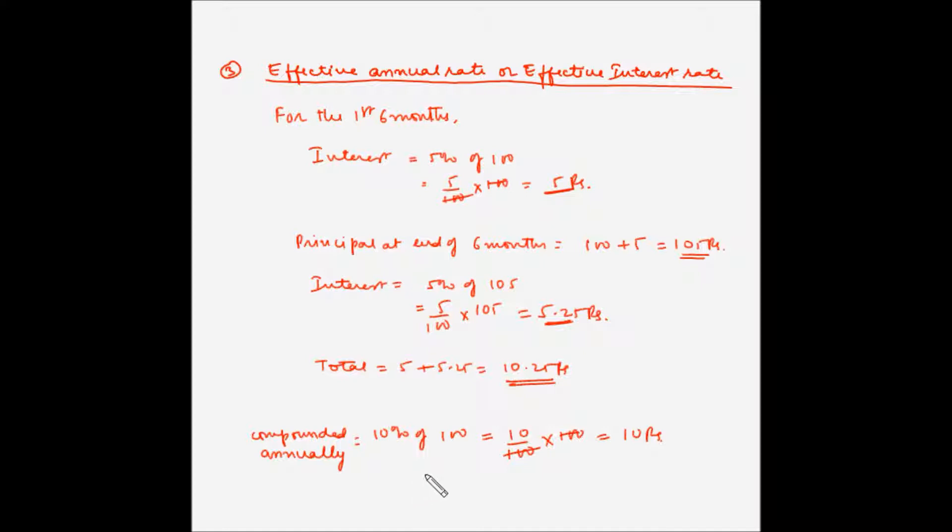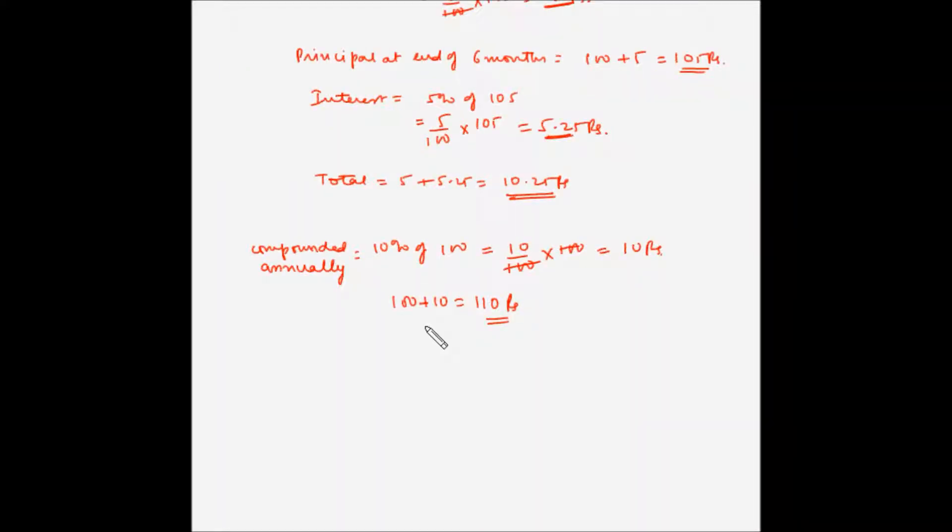So the total amount at the end of 1 year would have been 100 plus 10 which is 110 rupees. So basically, you received more interest overall under semi-annual compounding because you earned interest on the interest earned during the first 6 months and you will get still higher amount if the compounding is done quarterly or monthly.